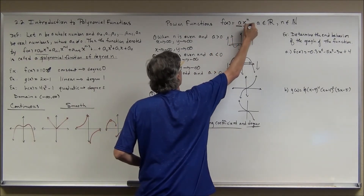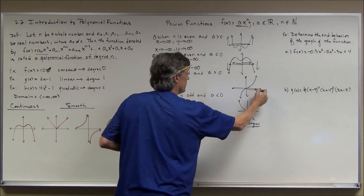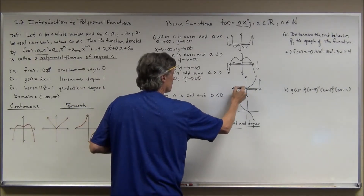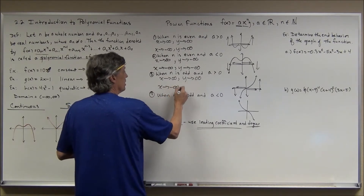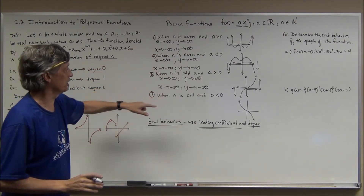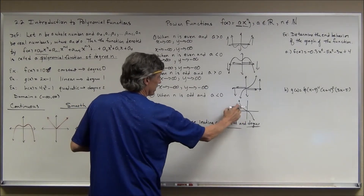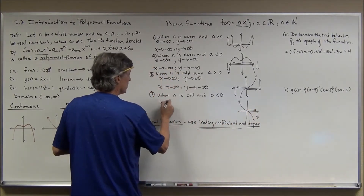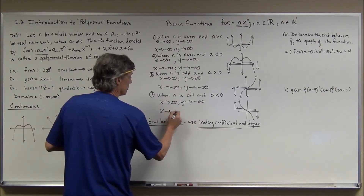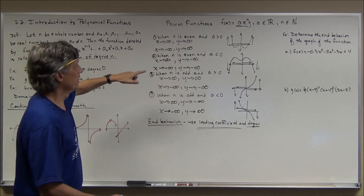We use the leading coefficient and the degree to describe end behavior. When n is odd and a is positive: as x goes to infinity, y goes to infinity; as x goes to negative infinity, y goes to negative infinity. When n is odd and a is negative: as x goes to infinity, y goes to negative infinity; as x goes to negative infinity, y goes to positive infinity. Knowing the end behavior is very important when sketching graphs.